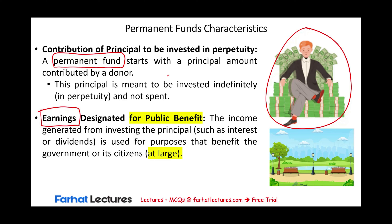Earnings from this money are designated for public benefit — very important. The income generated from investing the principal, such as interest or dividends, is used for purposes that benefit either the government or its citizens at large. The phrase 'at large' means no particular group of citizens. You are not targeting a specific type of people, because if you do, we're going to call it something else.